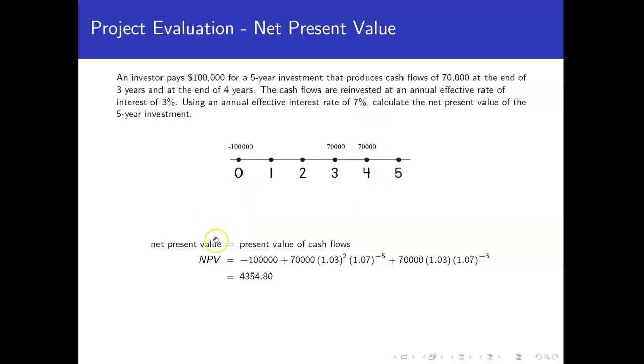So let's go through the process. The net present value is the present value of the cash flows. So obviously the hundred thousand dollars that we lay out initially is the value at time zero.